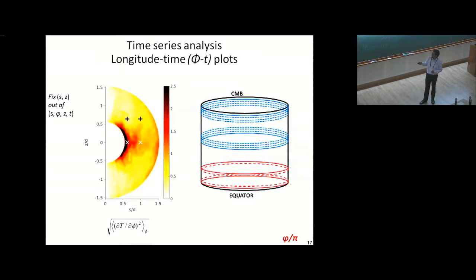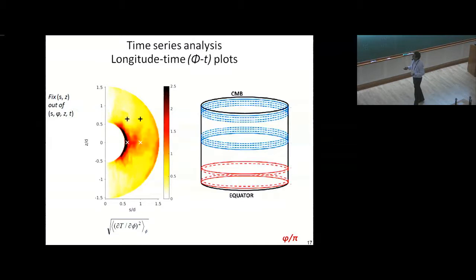The temporal evolution of the temperature is quite dynamic even in short times, because of the high thermal forcing. We should look at closer time intervals to analyze in more detail. For the time series, we fix points at given s and z and look at phi-t plots — circles with their axis parallel to Earth's axis. We want to know: does a movement here correspond to a movement just vertically above? And can we find a travel time estimate to compare with a group velocity or energy propagation argument?